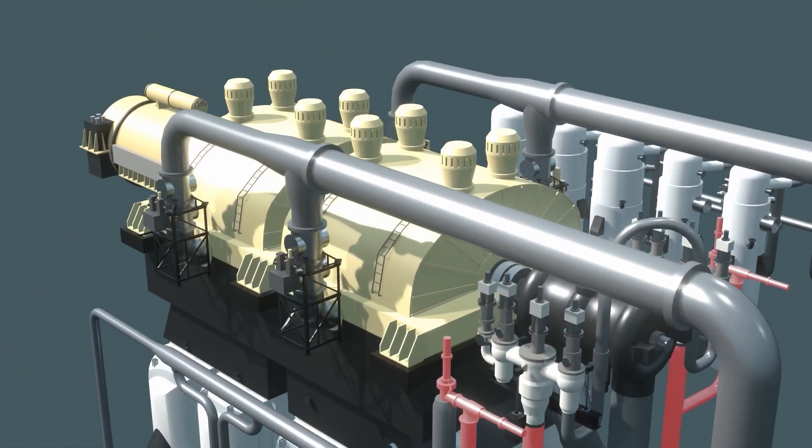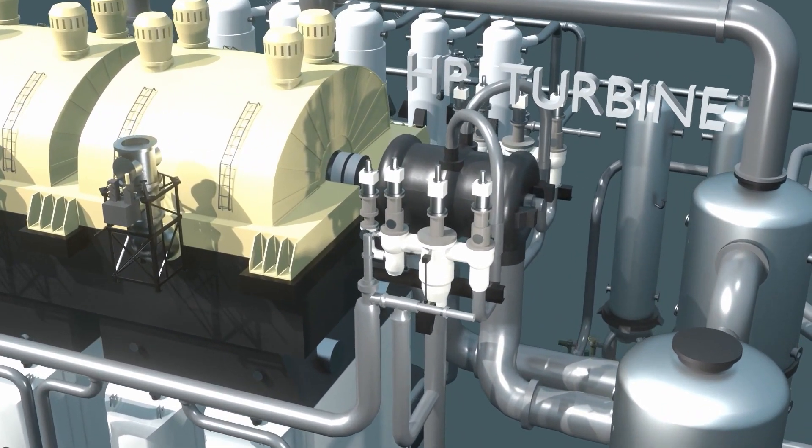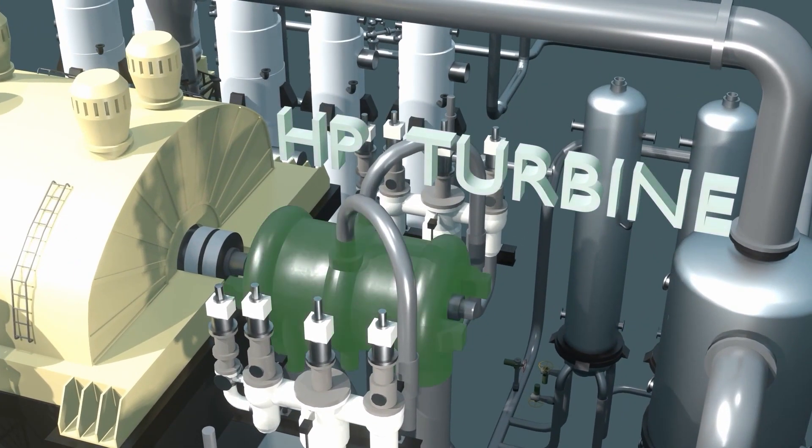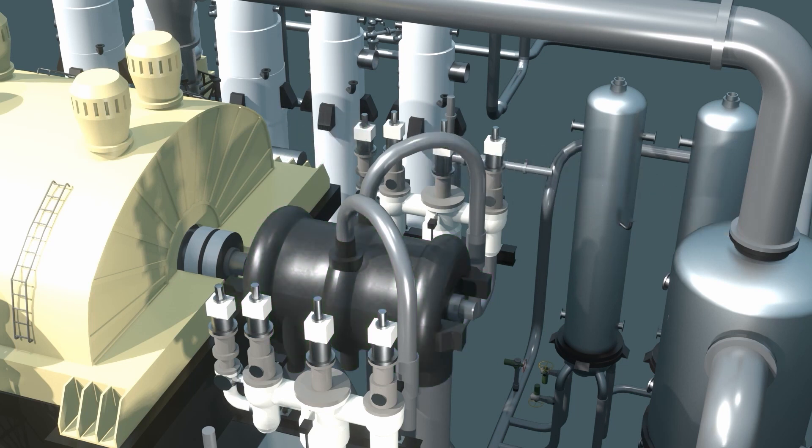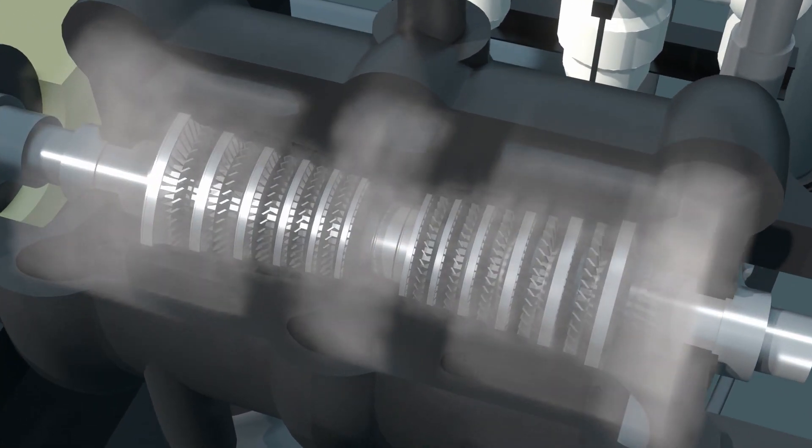The steam supplied from the steam generators flows first into the high-pressure section of the turbine. It expands, striking the turbine blades, thus spinning the turbine. In the high-pressure section of the turbine, the steam transfers most of its energy.